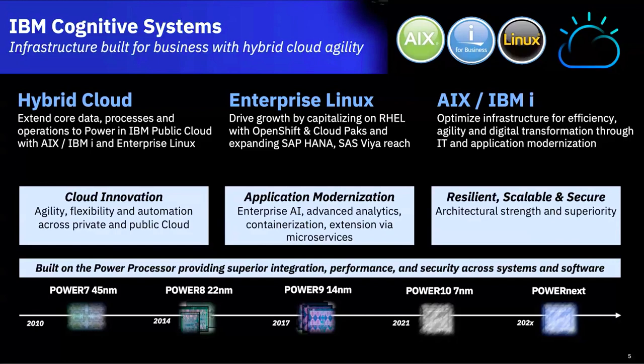Enterprise Linux covers products built around SAP HANA, SAS Viya, and our sister company Red Hat, which IBM acquired last year. We're heavily focused on OpenShift as a mechanism to take monolithic applications, containerize them, and make them into modular microservices that can be composed and deployed on enterprise Linux — whether on smaller cluster boxes or large systems.